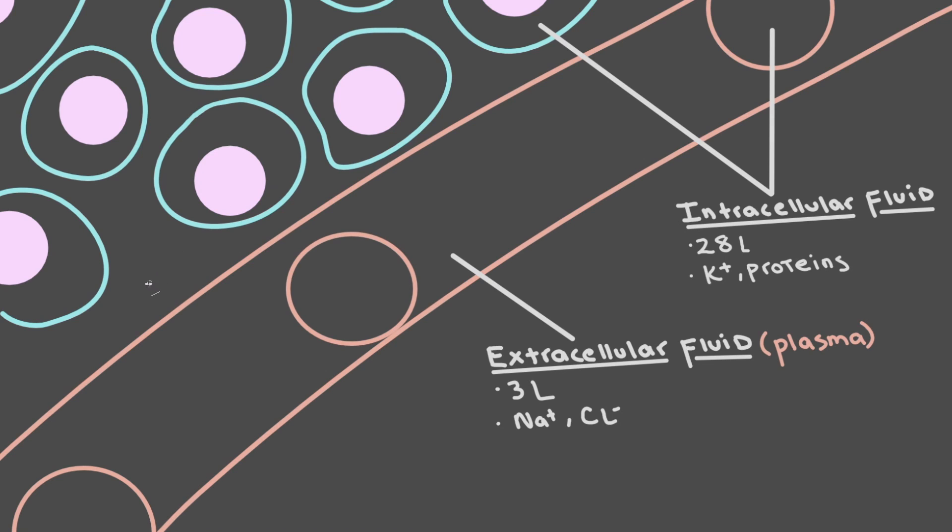But you'll notice that there's some other gray space right here that is not in your blood vessels but is also outside of the cells. So this is also extracellular fluid because it's not in any cell.